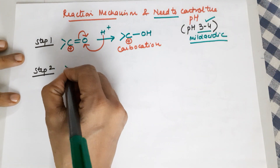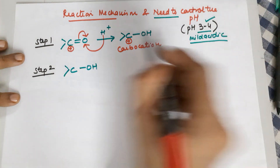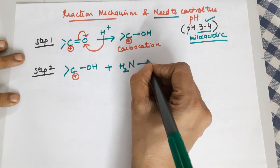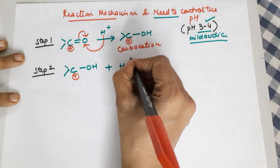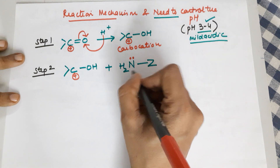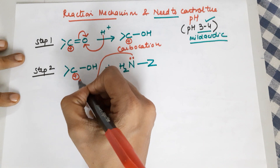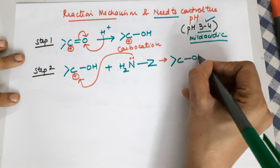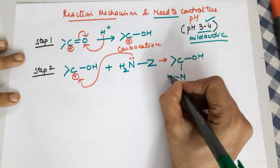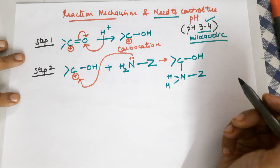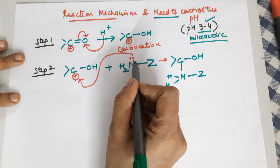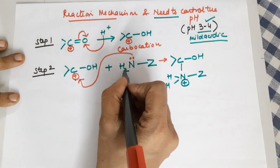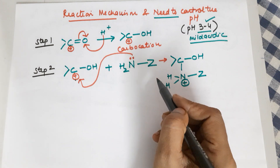Step 2 involves attack of the carbocation by the ammonia derivative. Your ammonia derivative is NH2-Z as explained. The important thing is the lone pair on nitrogen — it is because of this lone pair that it acts as a nucleophile, attacking the positive carbon centre. You end up with carbon bearing an OH and the NH2-Z group attached. Since the lone pair is donated, nitrogen gets a positive charge.